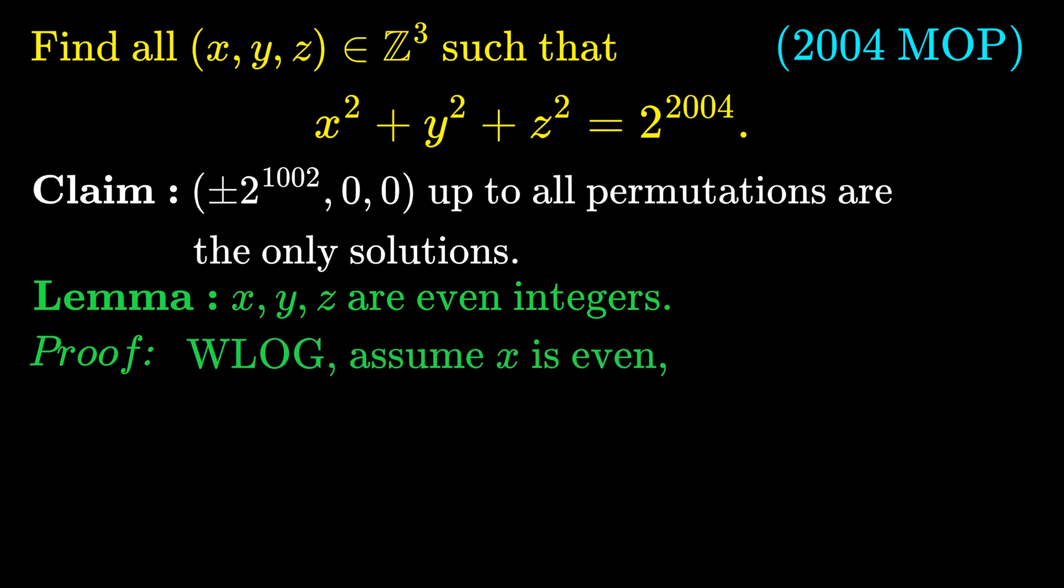Then, let x equal 2m and assume that y and z are odd. If they are even, then we are done. Now, we will take modulo 4 both sides of the equation.